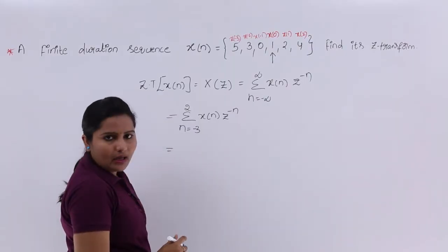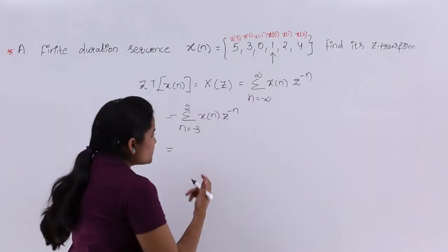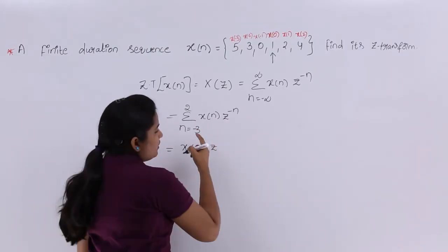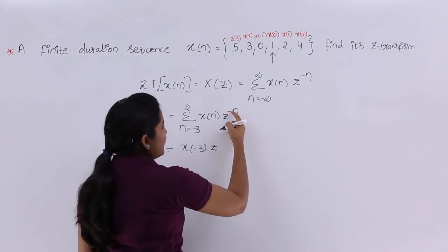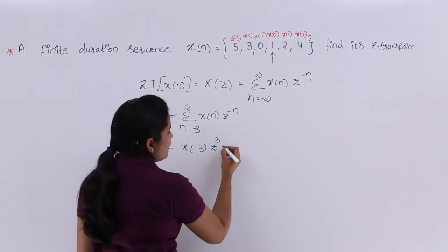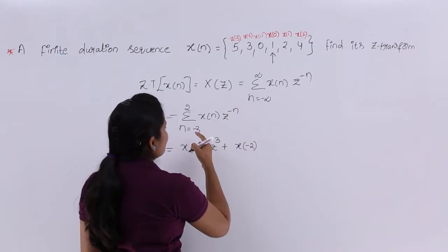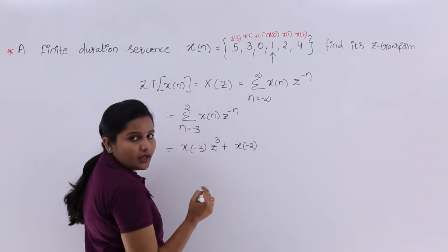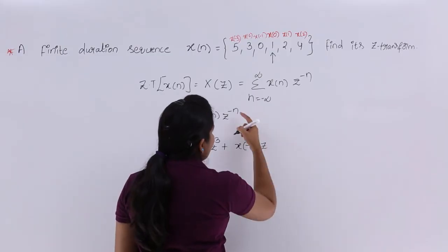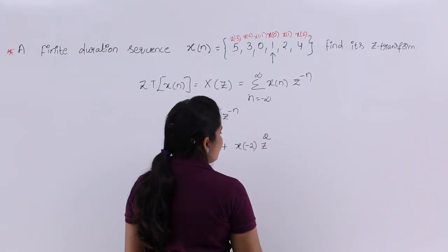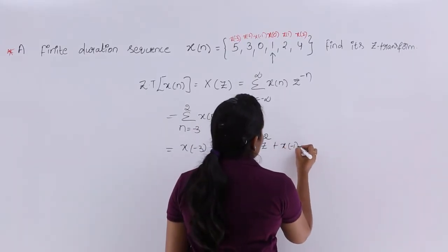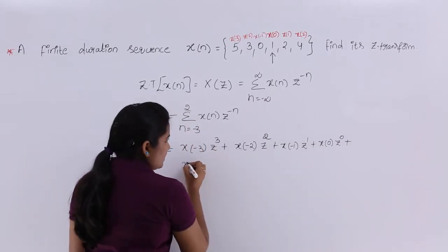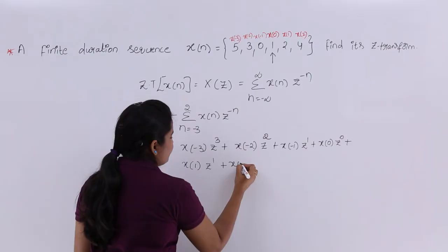Now I am expanding this equation by substituting the values. Starting with X of minus 3 into Z power: substituting n equals minus 3 gives Z power cube. Then plus X of minus 2 into Z square, plus X of minus 1 into Z power 1, plus X of 0 into Z power 0, plus X of 1 into Z power minus 1, plus X of 2 into Z power minus 2.